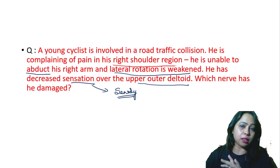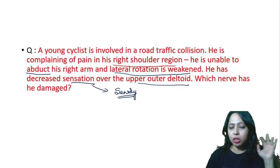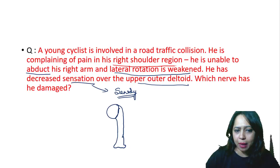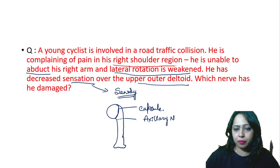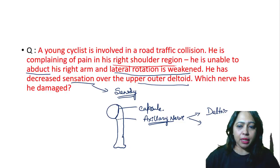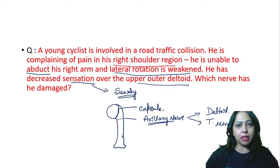The humerus has an anatomical neck and a surgical neck. The anatomical neck is where the capsule of the shoulder joint is attached. The surgical neck is related to the axillary nerve. The axillary nerve can easily get damaged whenever there is a dislocation of the shoulder joint. The axillary nerve supplies two muscles: the deltoid and the teres minor.